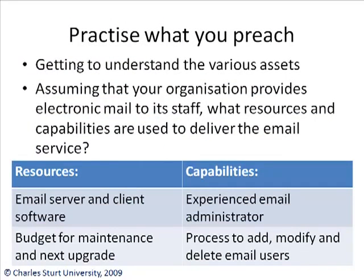Practice what you preach — getting to understand your various assets. Assuming that your organization provides electronic mail to its staff, what resources and capabilities are used to deliver the email service? Examples of resources include an email server, client software and budget for maintenance and upgrades. For capabilities, you probably need an experienced email administrator and processes in place to add, modify and delete email users. Think about some more examples of resources and capabilities you can add to this list.